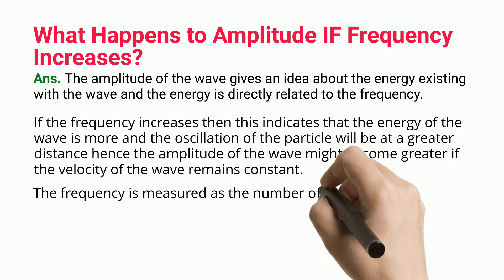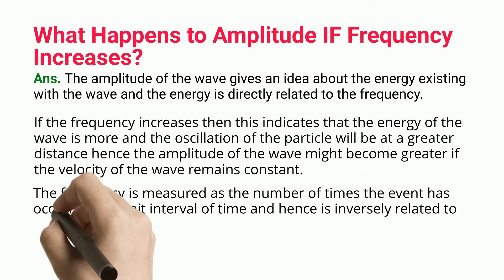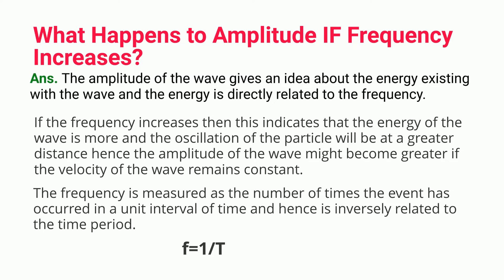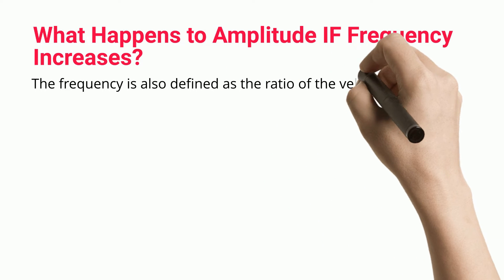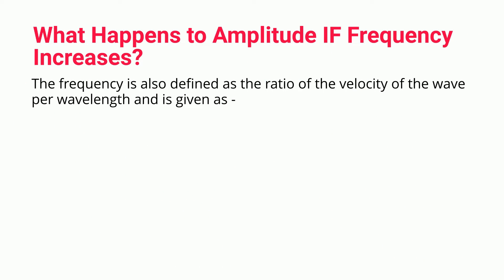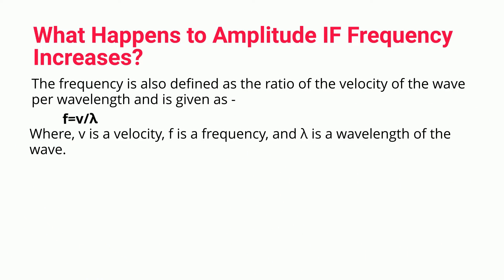The frequency is measured as the number of times the event has occurred in a unit interval of time and hence is inversely related to the time period: f equals 1/T. The frequency is also defined as the ratio of the velocity of the wave per wavelength, given as f equals V/λ, where V is the velocity, f is the frequency, and λ is the wavelength of the wave.